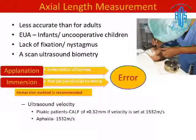Regarding ultrasound velocity, one must be sure what ultrasound velocity is set on the A-scan machine. In phakic patients, you can add a corrected axial length factor of around +0.32 mm if velocity is set at 1532 m/s on the A-scan machine. In aphakic patients, the velocity should be set at 1532 m/s to avoid any error.